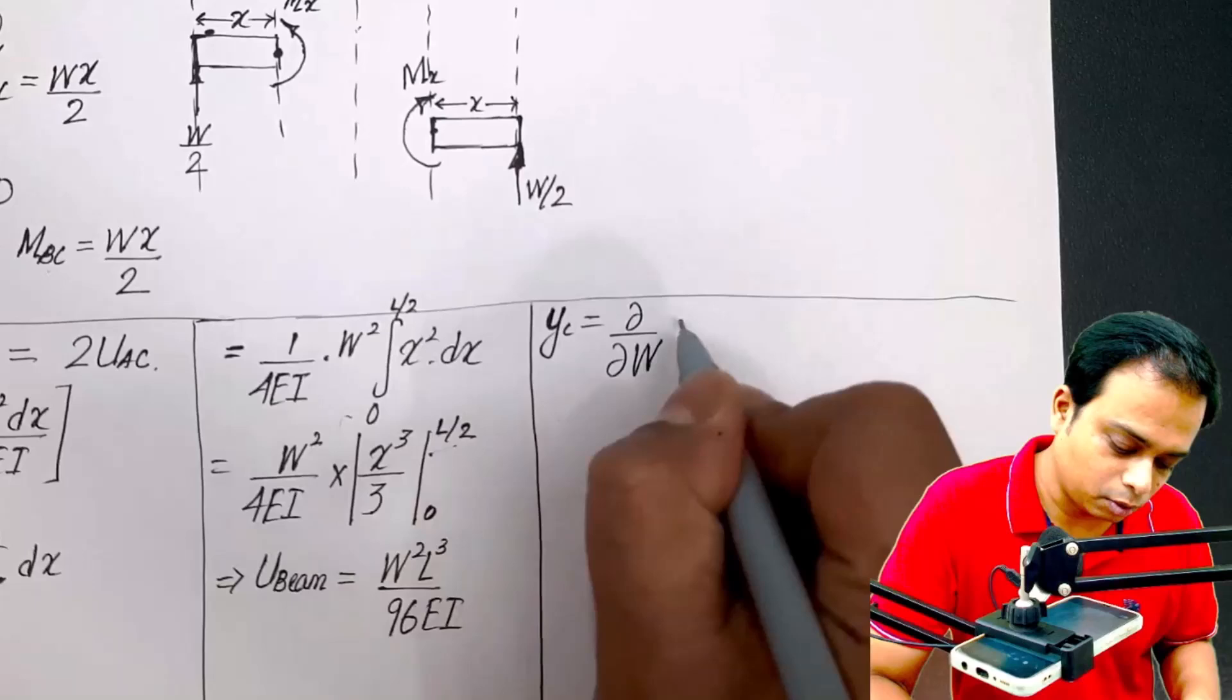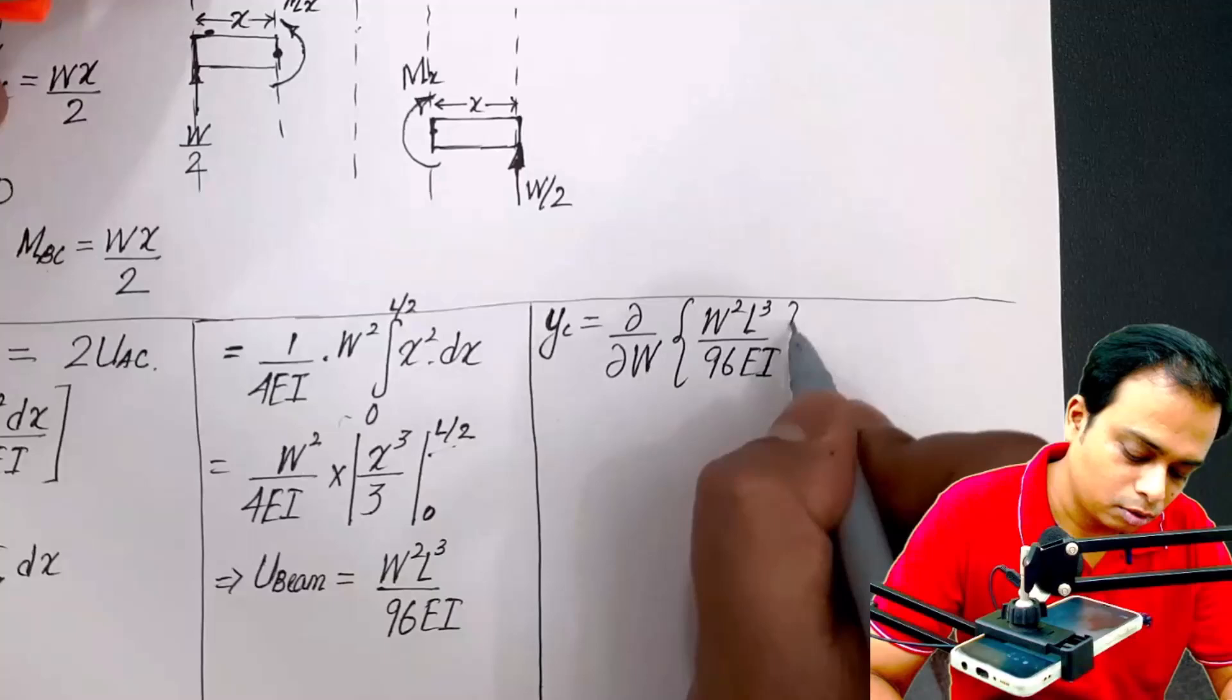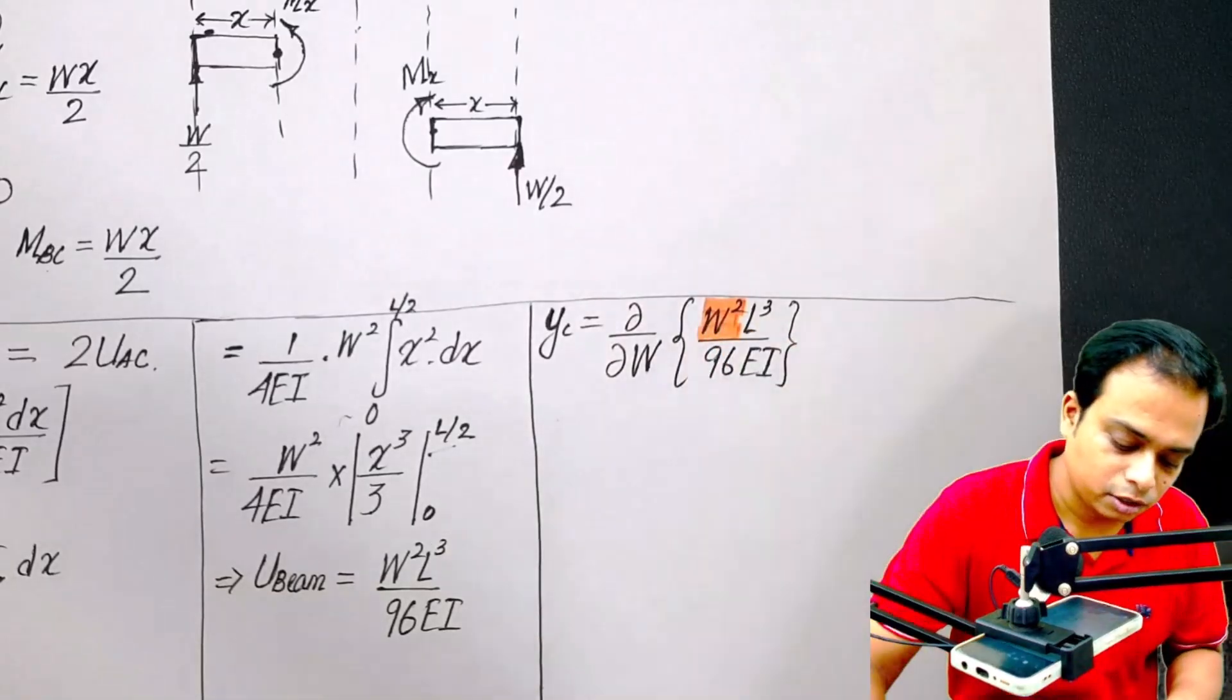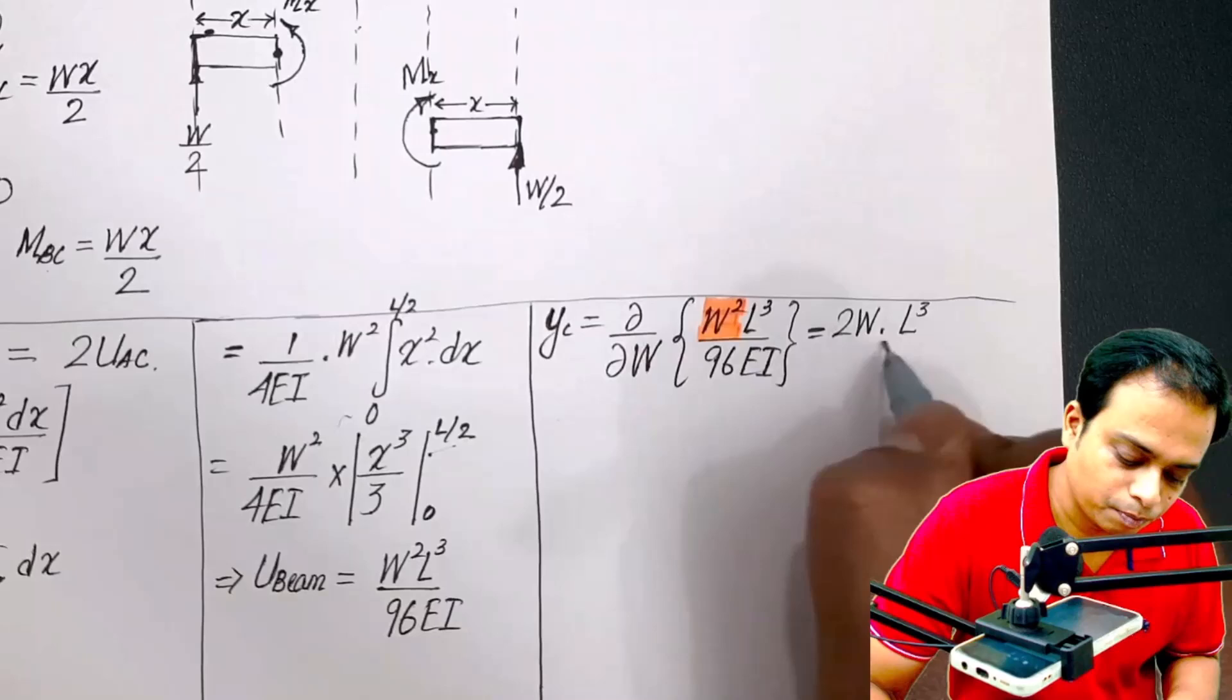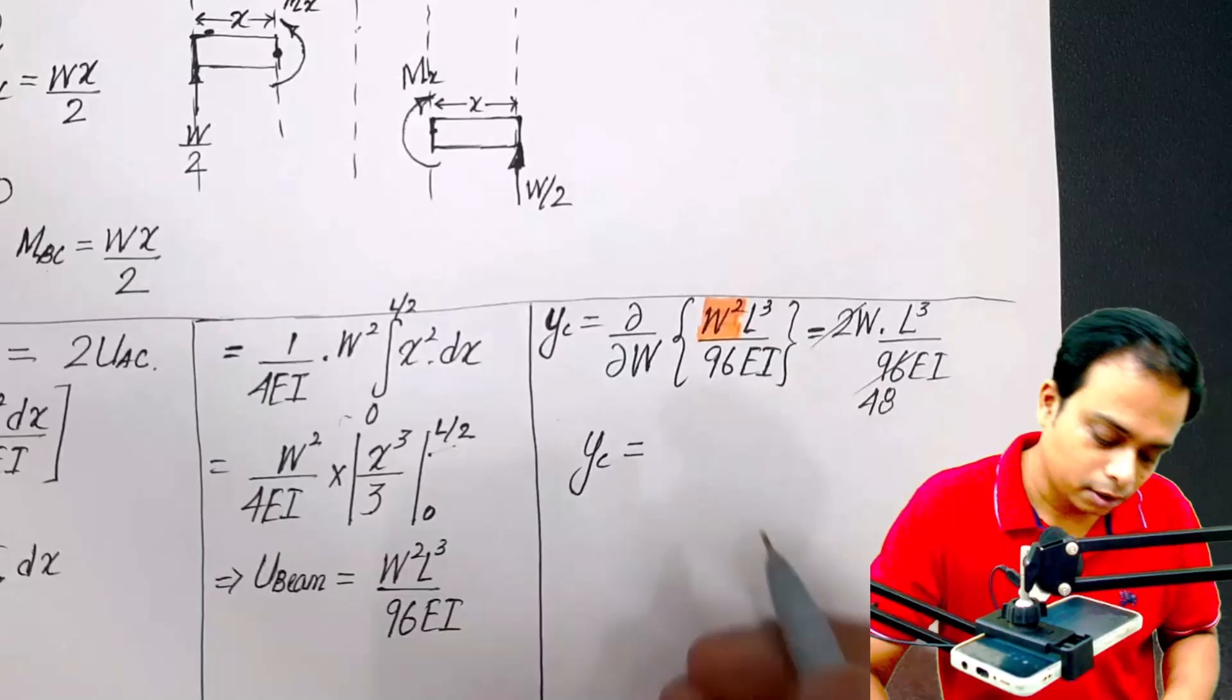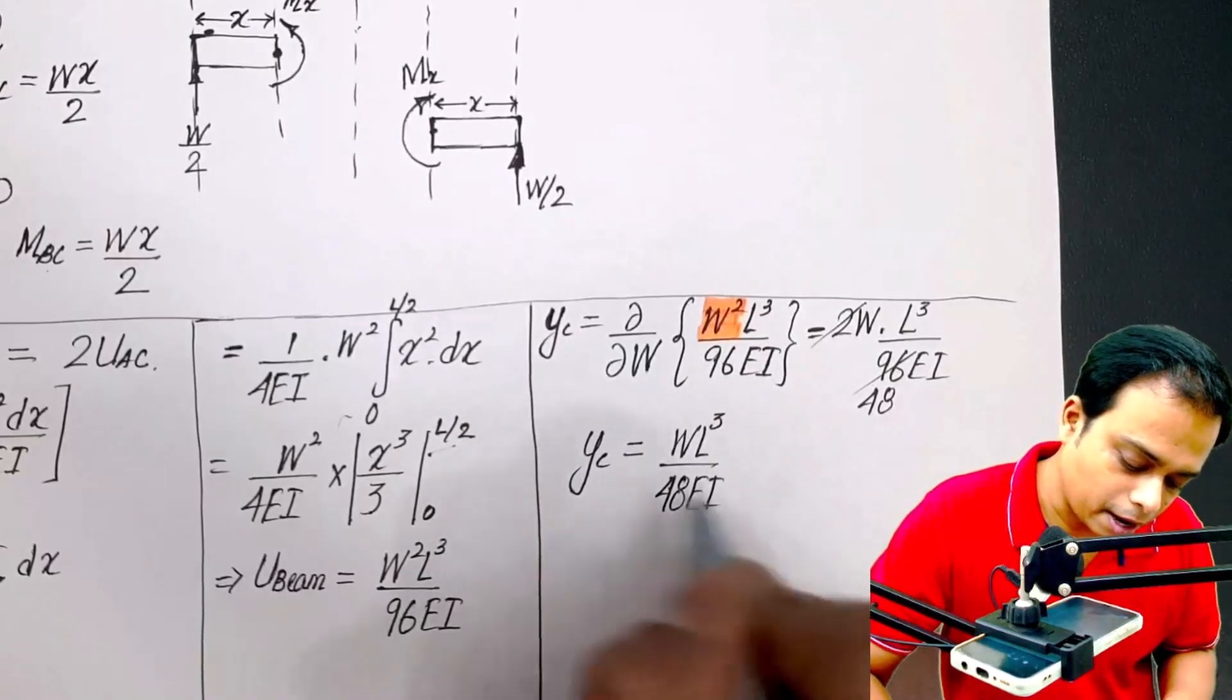del Y del W of W squared L cube upon 96 EI. And please note, there is only one term which you have to be concerned about, and that's with respect to W. This is that term, right? Differentiate. So this is going to be 2W, 2W times of L cube over 96 EI, 2 times of 48. And here we go, the central deflection for a simply supported beam with a central load is equal to WL cube upon 48 EI. That is your final answer.